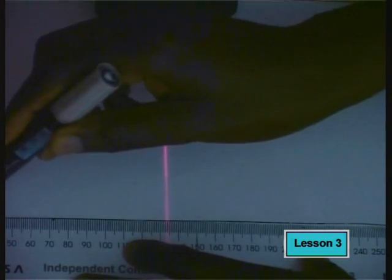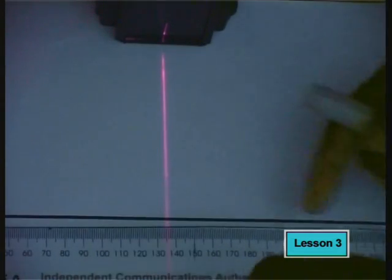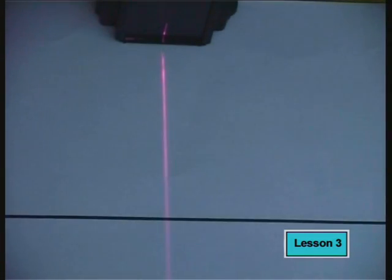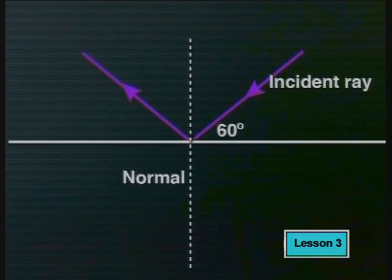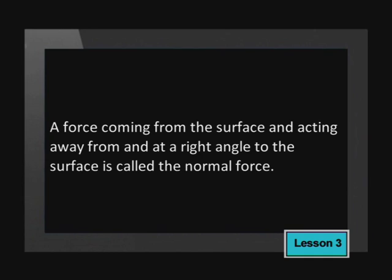As with many scientific terms, the everyday meaning of the word 'normal' does not apply here. This term actually comes from geometry, and you should remember it from the work you covered in geometrical optics. If a surface and a line are at right angles to each other, we say that the line is normal. So any line at right angles to a surface is called a normal line, and so the force coming from a surface and acting away from and at a right angle to the surface is called the normal force.